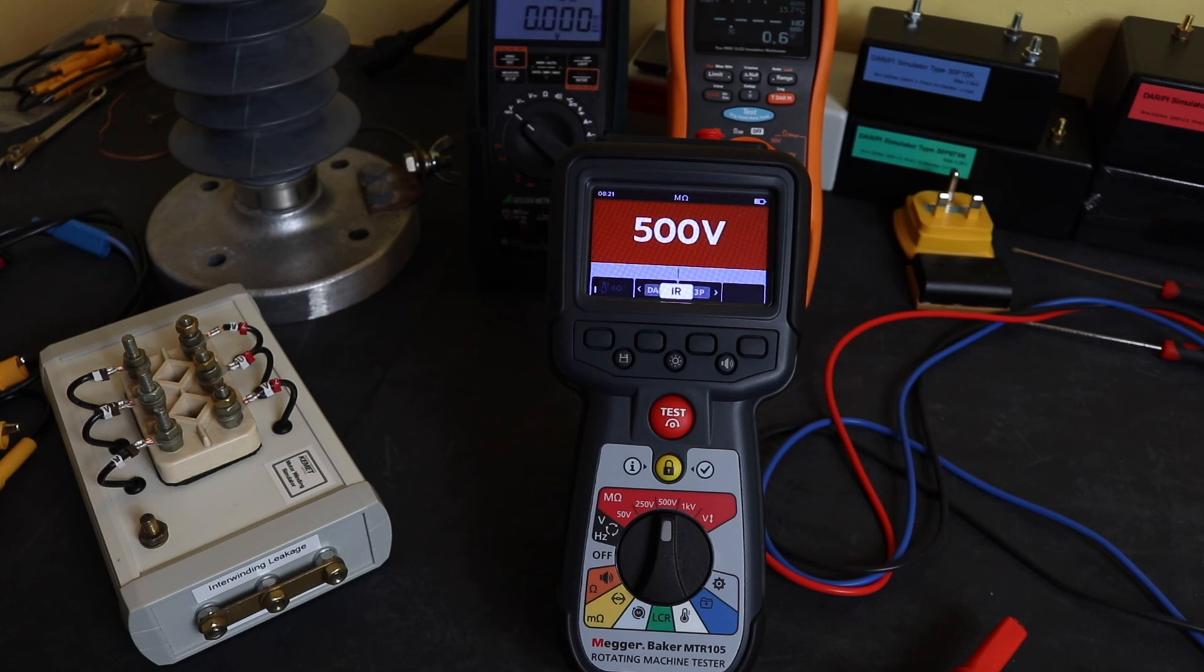Welcome back to the channel. This video is about using the guard terminal on the MTR105 rotator machine tester from Megger whilst carrying out insulation testing. I've actually got a bit out of sync with these videos. I did want to have this video out much earlier but got delayed trying to build up this bushing.